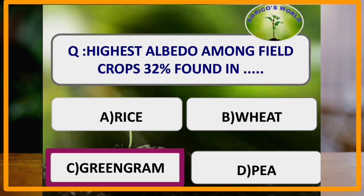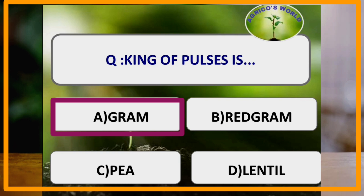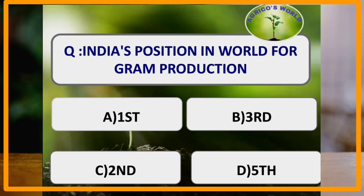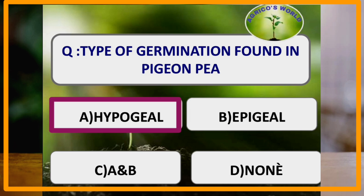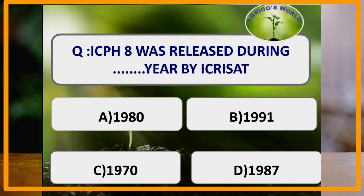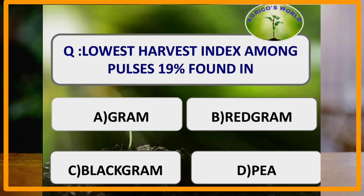King of pulses is gram. India ranks first position in gram production in the world. Type of germination found in PGNP is hypogeal germination. ICPH-8 was released during the year 1991 by ICRISAT using the GMS method. Lowest harvest index among pulses, that is 19%, is found in red gram (Cajanus cajan).